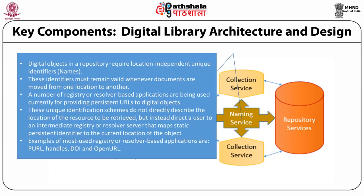The digital library developers interface with the digital library using the repository access protocol, known as RAP. This RAP recognizes rights and permissions to enforce intellectual property rights. The naming service basically provides location-independent unique identifiers. These identifiers must remain valid whenever documents are moved from one location to another. A number of registry or resolver-based applications are used currently for providing persistent URLs to digital objects. These unique identification schemes do not directly describe the location of resources to be retrieved, but instead direct a user to an intermediate registry or resolver server that maps the static persistent identifier to the current location of the object. The examples of most-used registry or resolver-based applications are PURL, Handles, DOI, and OpenURL.